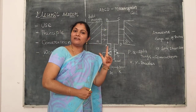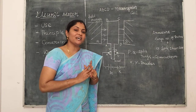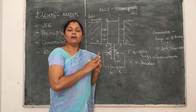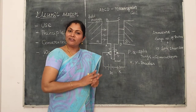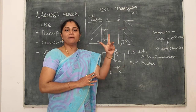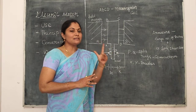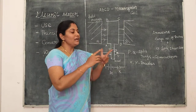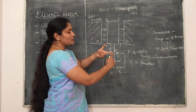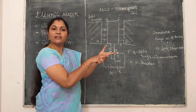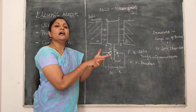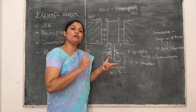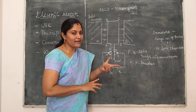We know Fleming's left hand rule. Fleming's left hand rule is the main principle of electric motor. Let us revise the concept: the forefinger denotes the direction of the magnetic field, the middle finger denotes the direction of current, and the thumb finger denotes the direction of force experienced by the current-carrying conductor.